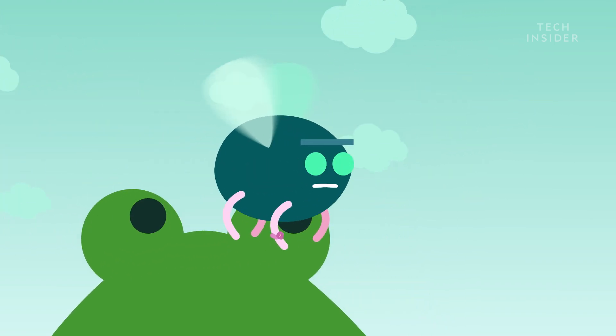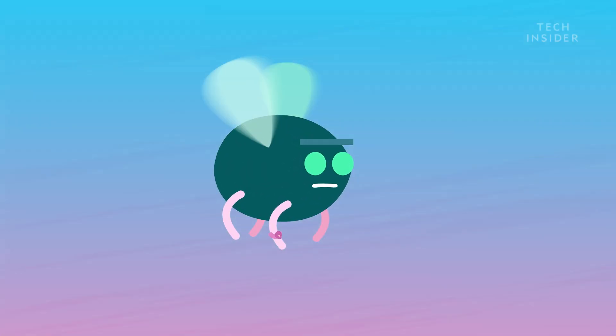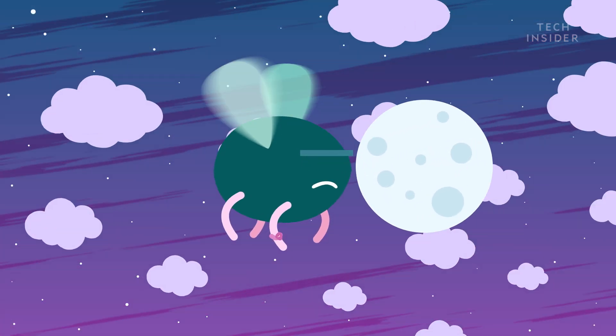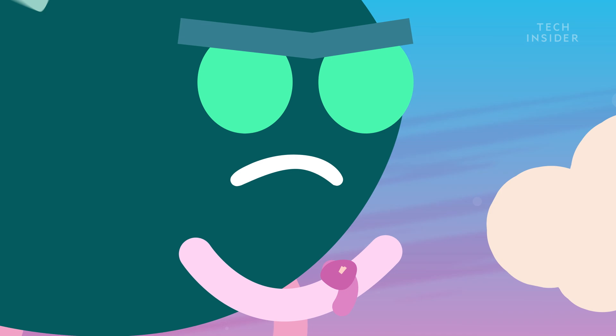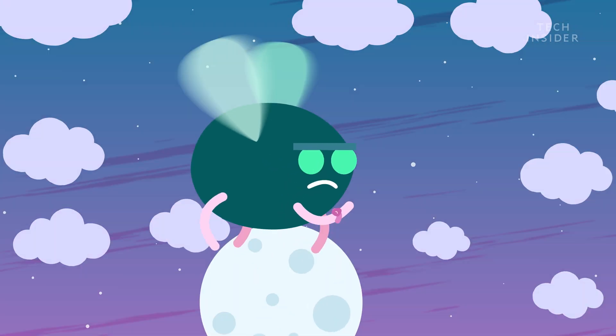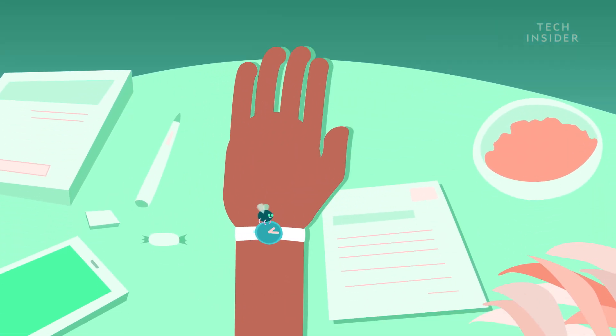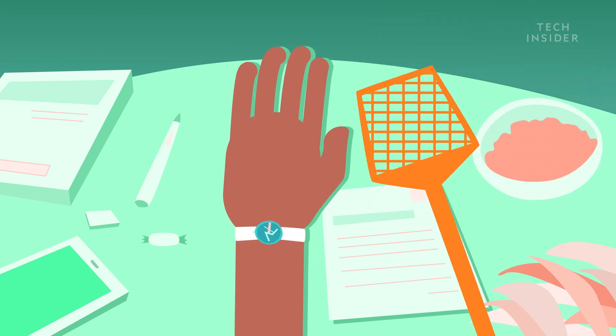It's even more impressive when you consider that flies experience time more slowly than other animals. Each second feels like four seconds to a fly, so they have all the time in the world to escape a predator. Just think about the last time you tried swatting a fly. Not so easy, right?